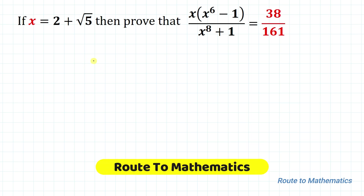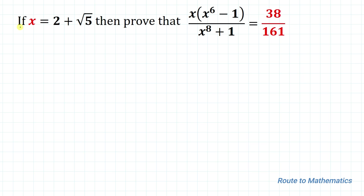Hello everyone, welcome to Root 2 Mathematics. In this video we are going to solve an interesting Olympiad question. The given question is: if x equals 2 plus √5, then prove that x · (x⁶ - 1) / (x⁸ + 1) equals 38/161.